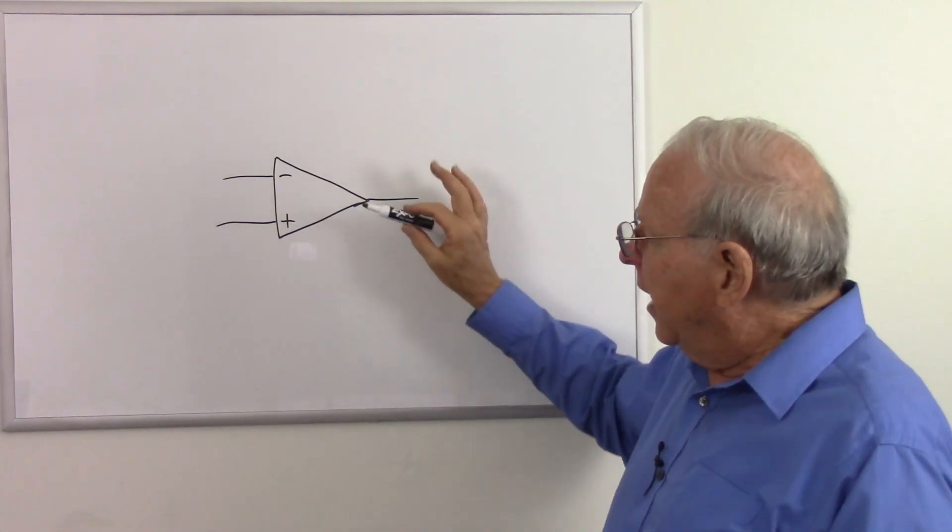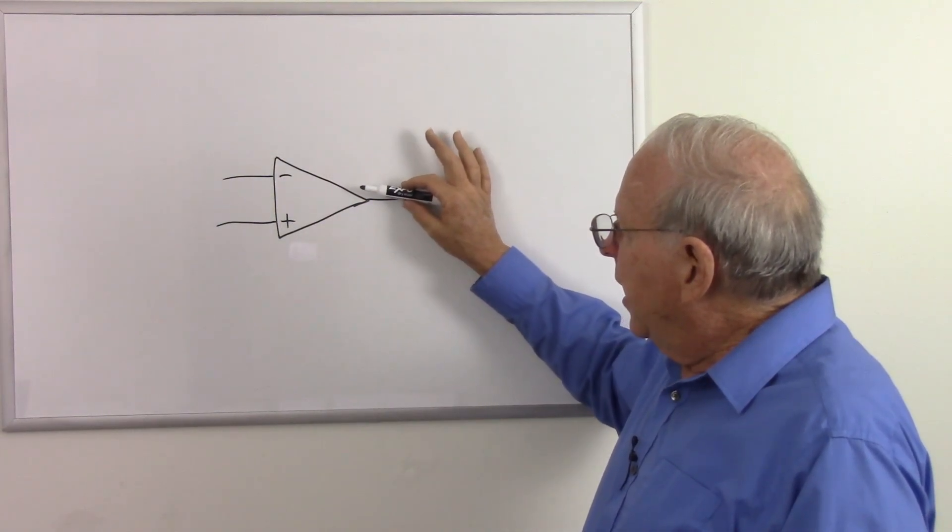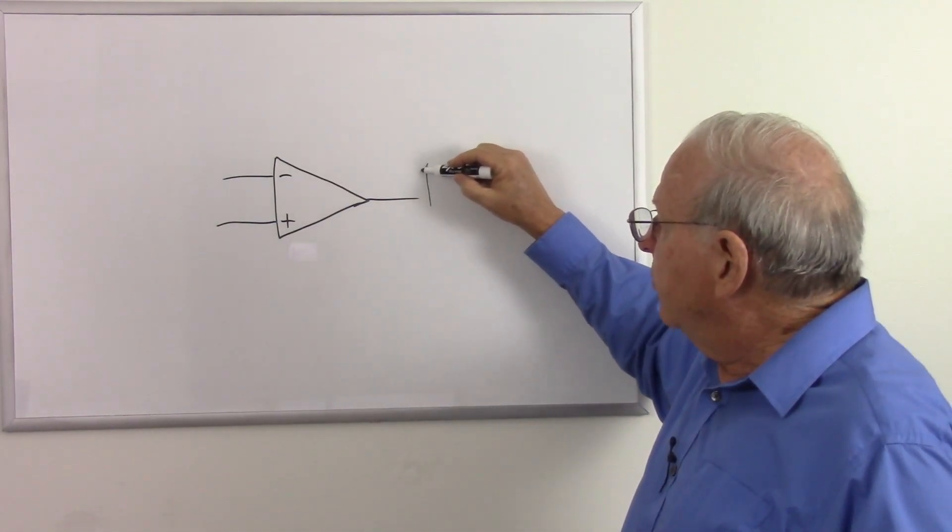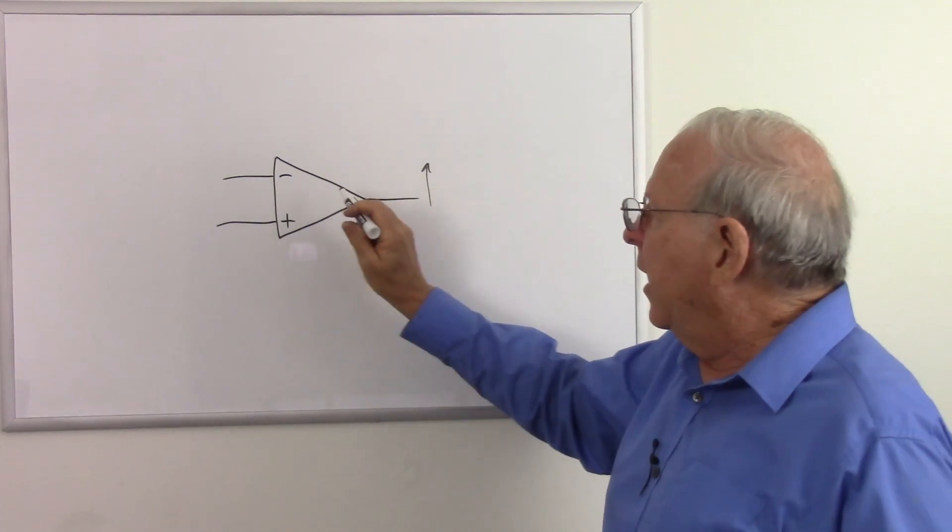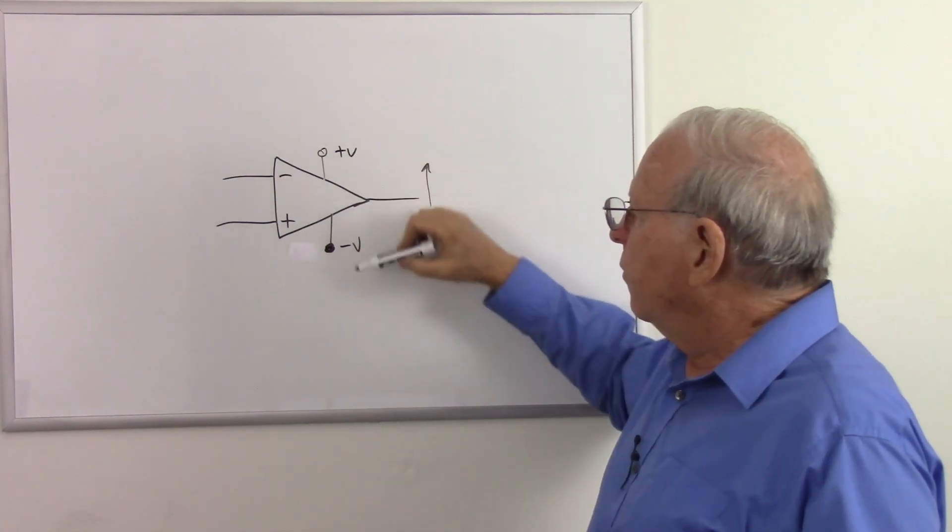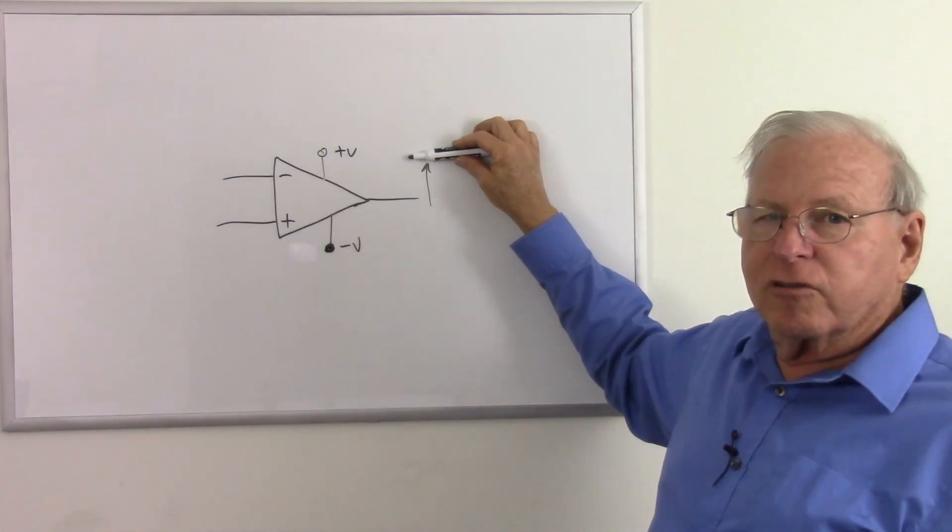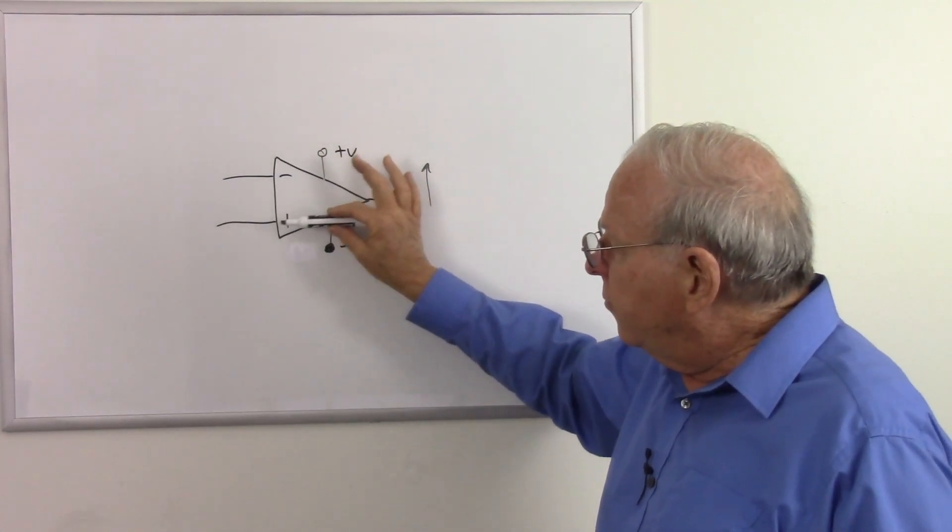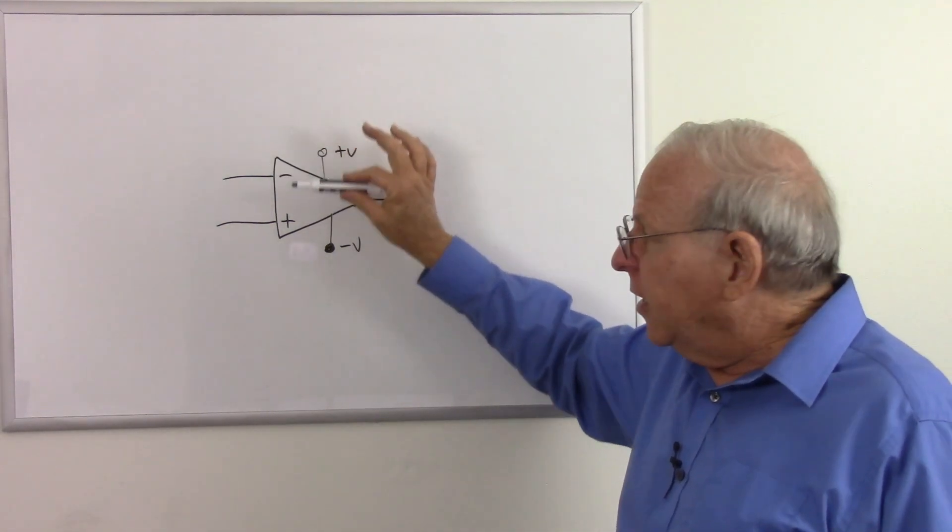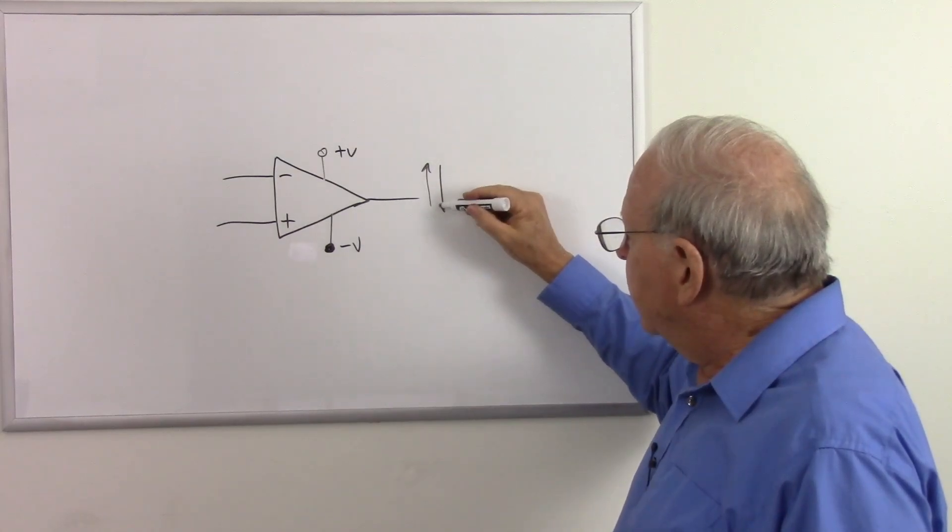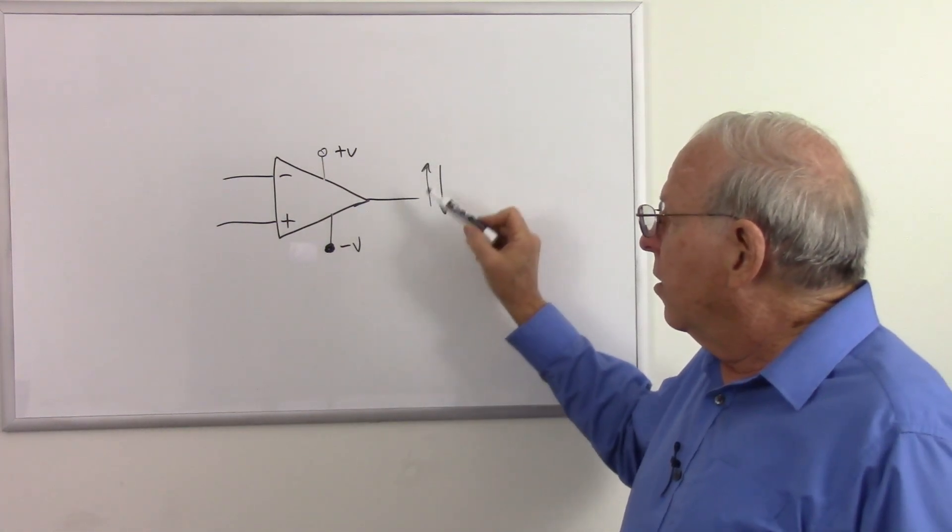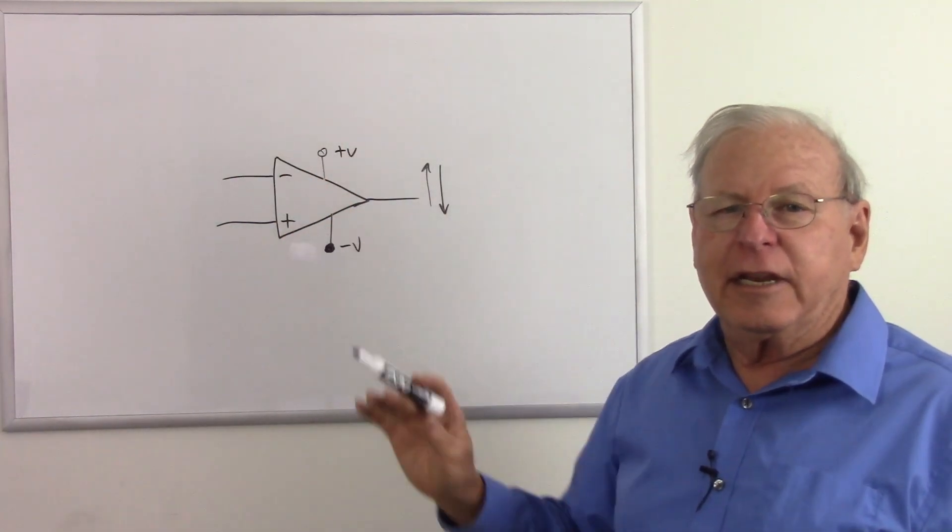We have two inputs and an output, and the idea is that if the non-inverting input has a higher voltage than the inverting input, the output is going to rise, and it will rise until one of two conditions is met. Either it can't go any higher because of the supply voltage, so let's put the supply voltage here, whatever those voltages are. It goes up to this voltage or as close as it can get. That's as far as it's going to go. Or if these two inputs become equal, it will stabilize at that particular voltage. And if the inverting input voltage is higher than the non-inverting input voltage, the output voltage will go down until one of two things happen. Either it hits this lower voltage or as close as it can go, or they become equal. So there's a lot we can do with this circuit that I'll talk about in detail down the road.